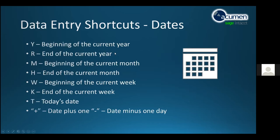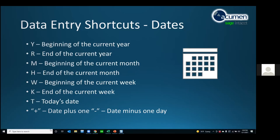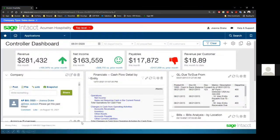One area where you're tempted to grab the mouse most frequently is dates and calendars. You can use Control Home, Page Up, Page Down, Control Left and Right, Enter, and Escape to move around a calendar when doing an AP bill. Also, if you're in a date field and just want beginning of the year, end of the year, beginning of the month, end of the month, beginning or end of the week, you can use shortcut keys to automatically put in those dates.